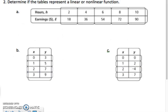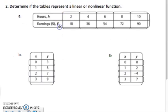Tables are a little bit trickier. You have to make sure that they are going up by a constant rate each time. So what you have to do is find the rate of change.